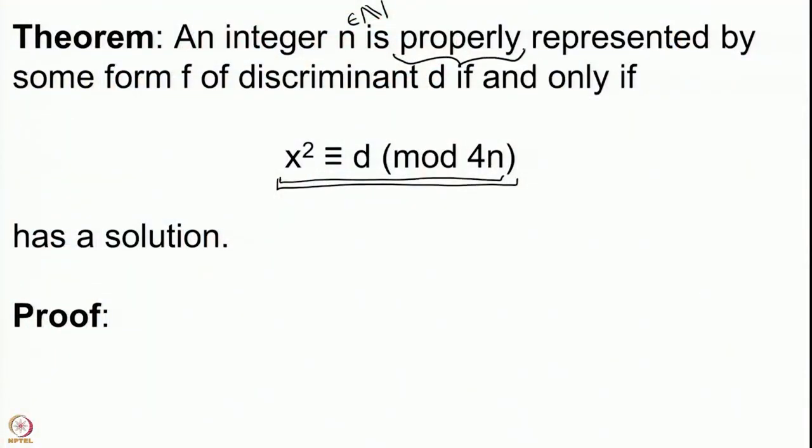This is equivalent to some form of discriminant d representing n properly — that is, some co-prime pair p, r with f(p, r) = n. We will begin with some form f of discriminant d representing n and show that x² ≡ d mod 4n has a solution. In the other direction we assume x² ≡ d mod 4n has a solution and construct some form — the form is not fixed. The statement is very liberal: we are allowed to choose any form of a given discriminant which represents n properly.